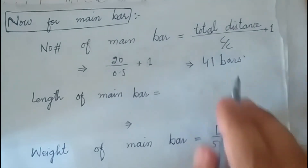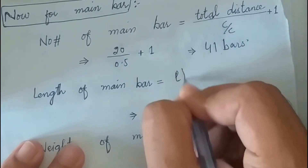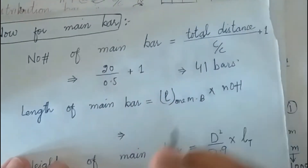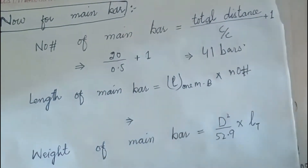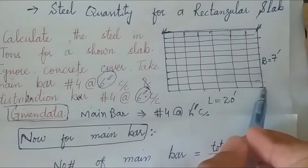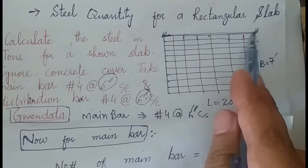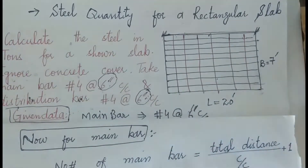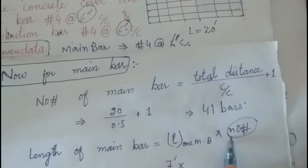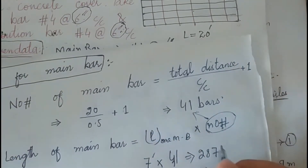Now we find the total length of the main bars. The formula is: length of one main bar multiplied by number of bars. From the diagram, the main bar starts from one end and ends at the other end along the shorter side, so the length of one main bar is 7 feet. Therefore: 7 feet multiplied by 41 bars gives 287 feet.